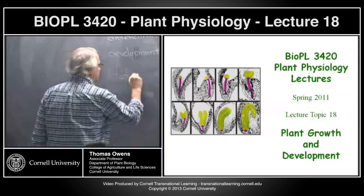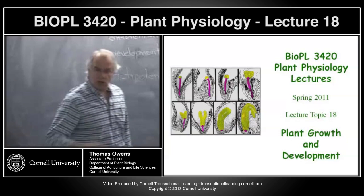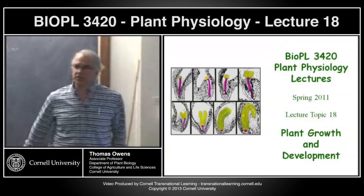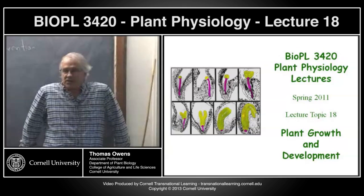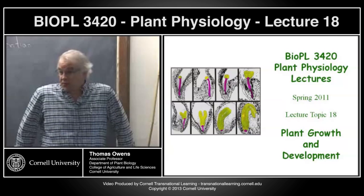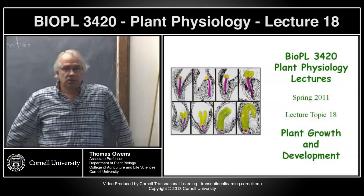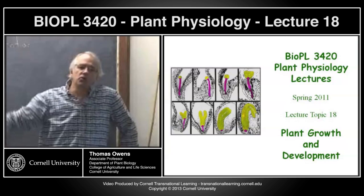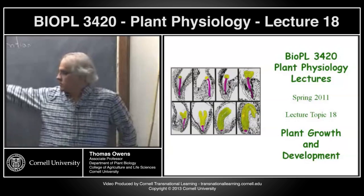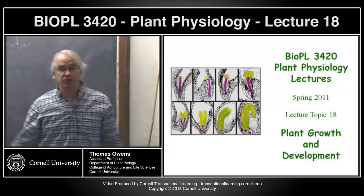One thing we need to keep in mind is the idea of totipotency. This basically means that all cells have the same genetic information in them — every single cell has all the information to make a whole new plant. That was actually first accomplished experimentally right here in this building by F.C. Stewart back in the 1930s. He cloned carrot cells — he took single cells from a carrot and grew a whole new carrot plant out of it. This was one of the first indications that every cell in the organism has the ability to reproduce a whole new organism.